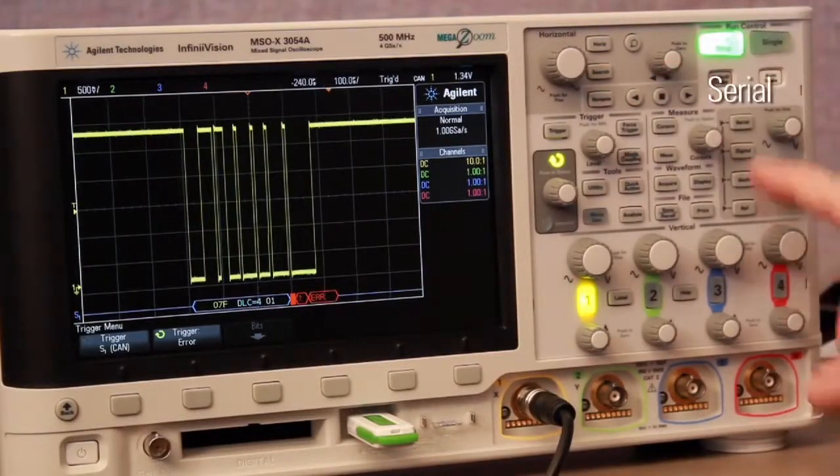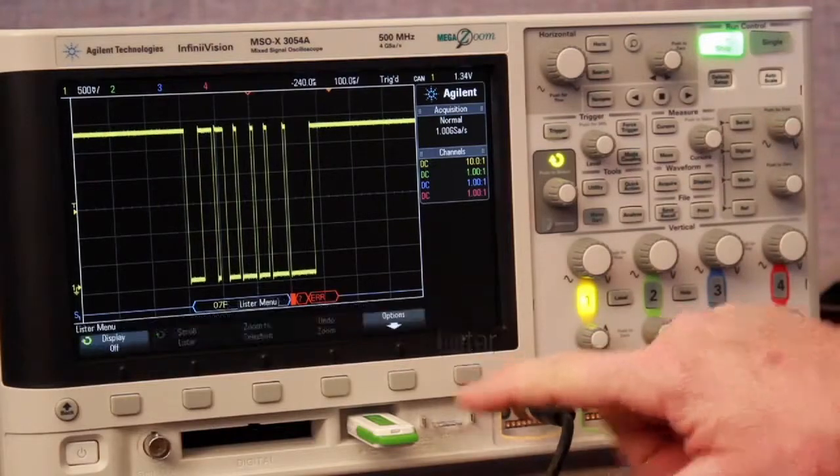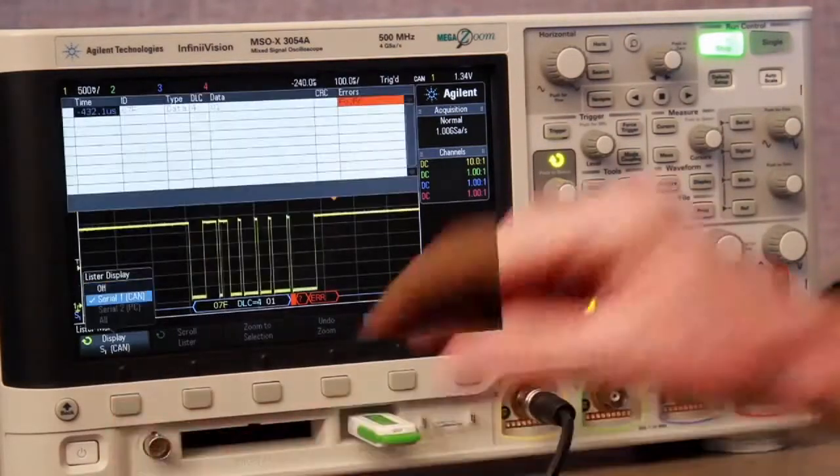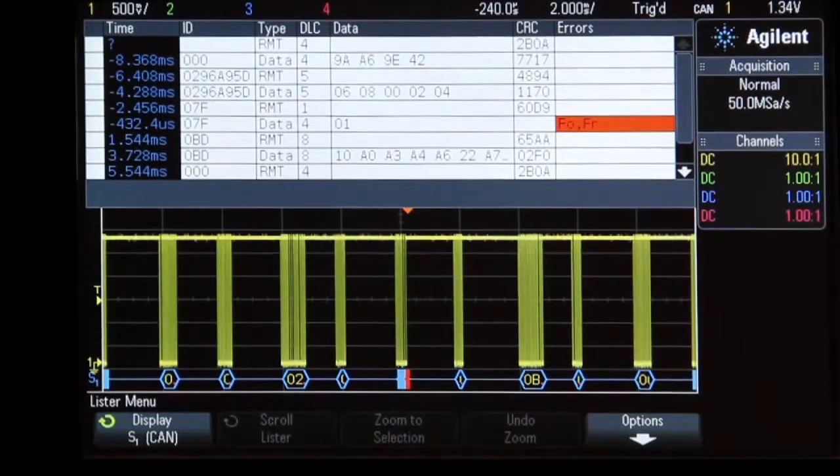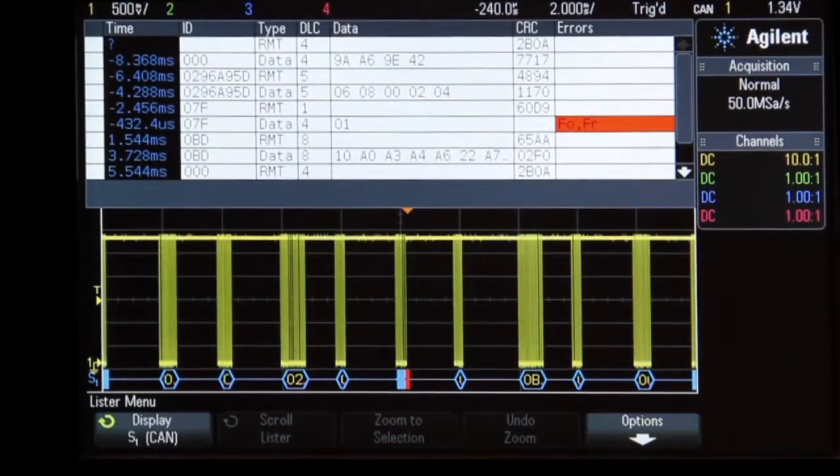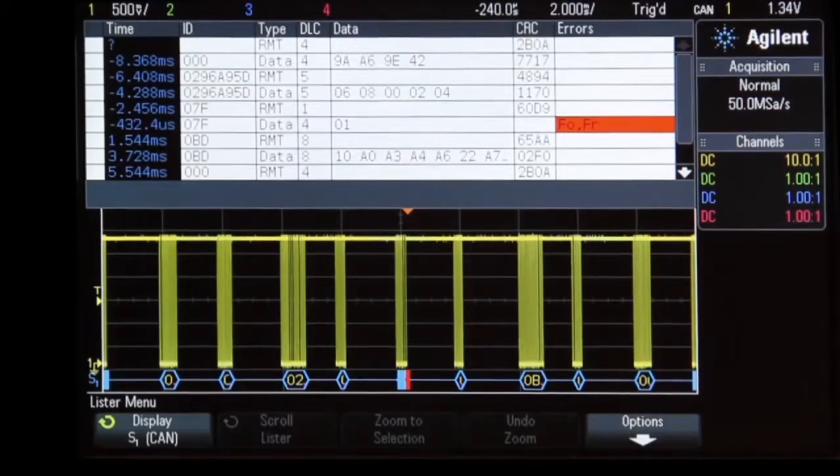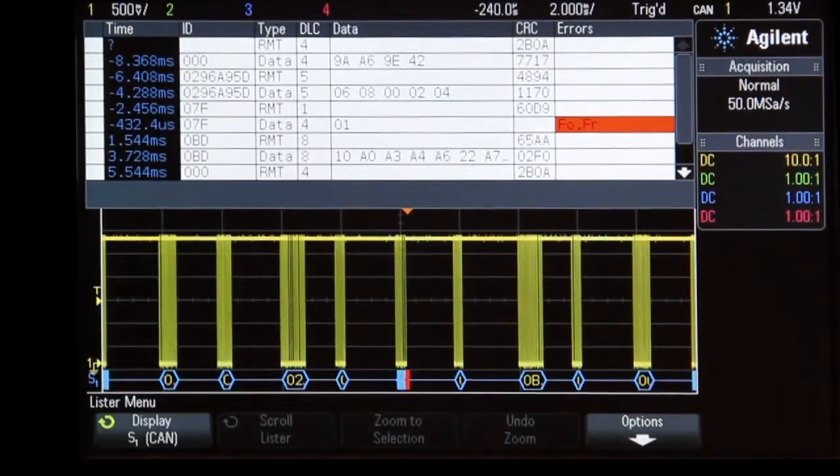In addition to viewing the time correlated decode trace below the waveform, we can also view this same information in a tabular format with clearly labeled columns of data that directly correlate to the fields of decoded data shown in the time correlated decode trace below the waveform.